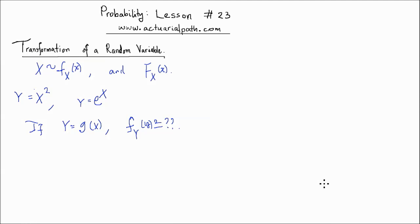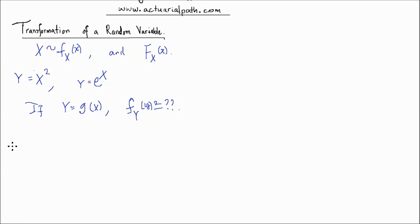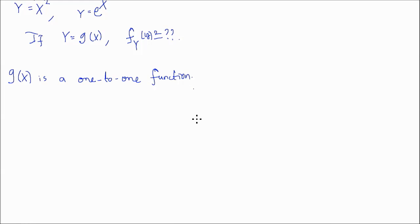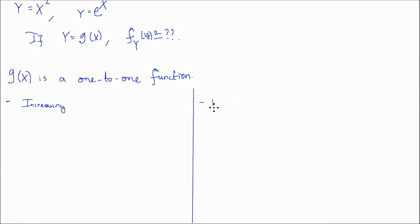I'm going to assume for this lesson that the random variable x is a continuous random variable. We first consider the case where g of x is a one-to-one function. I'll look at that in two different scenarios: where g of x is a one-to-one function and also an increasing function, and the second scenario where g of x is a one-to-one function and also a decreasing function.